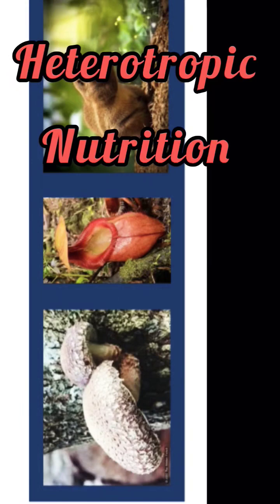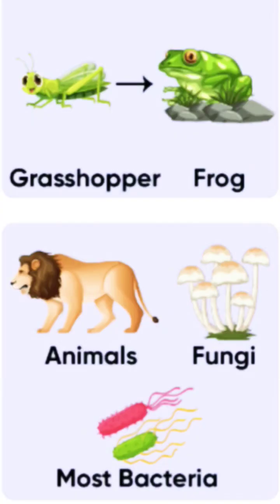The key difference between the autotrophic mode of nutrition and the heterotrophic mode of nutrition is that autotrophs make their own food using photosynthesis. On the other hand, heterotrophs cannot make their own food since they don't have chlorophyll.